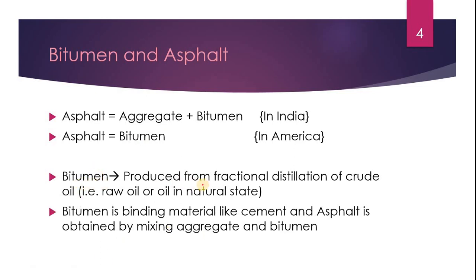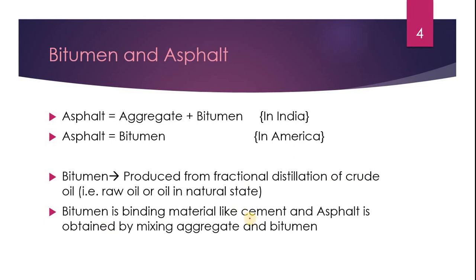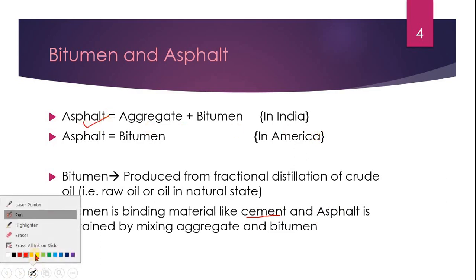Bitumen is produced from fractional distillation of crude oil. Fractional distillation means crude oil is a mixture of many oils like gasoline, kerosene, and petrol. At different temperatures, different liquids get distilled — this is fractional distillation. Bitumen is used as a binding material like cement, so instead of cement concrete, we get asphalt concrete when we use bitumen.